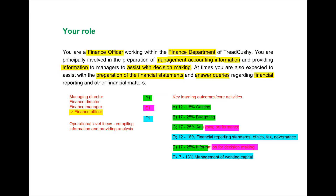Key learning outcomes C and E cover both P1 and E1 topics. Key learning outcome C has a weighting of 17–25% and concerns the analysis of performance — drawing on E1 knowledge like KPIs. Key learning outcome E also has a weighting of 17–25% and concerns providing information for decision making — again contributing to management accounting information and providing information to managers to assist with decision making. From this, we can see that P1 knowledge is going to be absolutely crucial to your success in the case study exam — it's essentially the foundation.